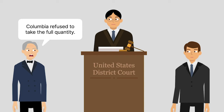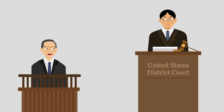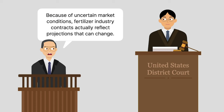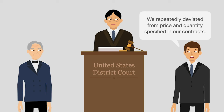Royster sued Columbia in federal district court. Columbia sought to offer evidence that under trade custom and the party's course of dealing, the contract didn't require Columbia to accept the specified quantity of phosphate at the specified price. Columbia proffered expert witness testimony that because of uncertain market conditions, fertilizer industry contracts actually reflected projections that could change according to market forces. Columbia also offered evidence that during its years of selling nitrogen to Royster, the parties repeatedly deviated substantially from both price and quantity as specified in their contracts.